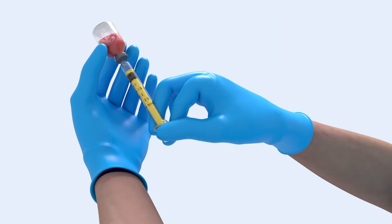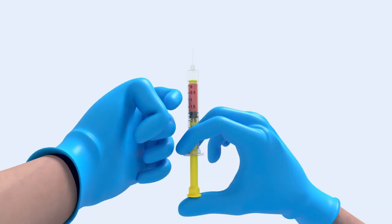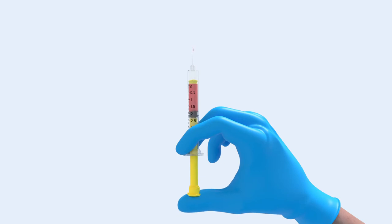Invert the vial and draw up the medication required. Add a little to compensate for any air bubbles. Tap syringe sides to bring any air bubbles to the top. Expel excess air from the syringe.